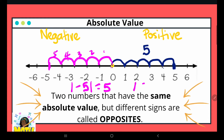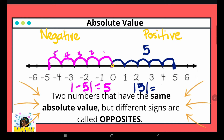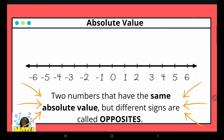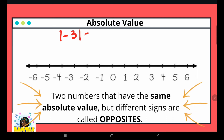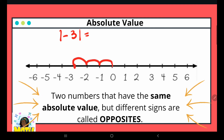The absolute value of positive five is also five. Now let's look at another example: what is the absolute value of negative three? Absolute value is my distance from zero. Starting at zero and hopping to negative three — the absolute value of negative three is three.